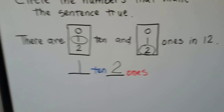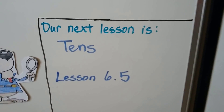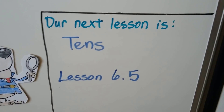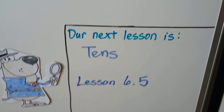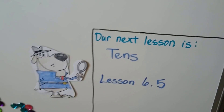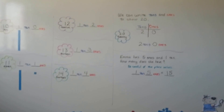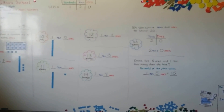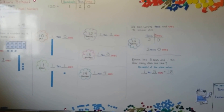We're going to keep talking about tens — that's our next lesson: Tens. It's going to be lesson 6.5. So aren't you glad this was a short little video? It was a quick lesson about making ten and ones. I'll see you next time. Bye!